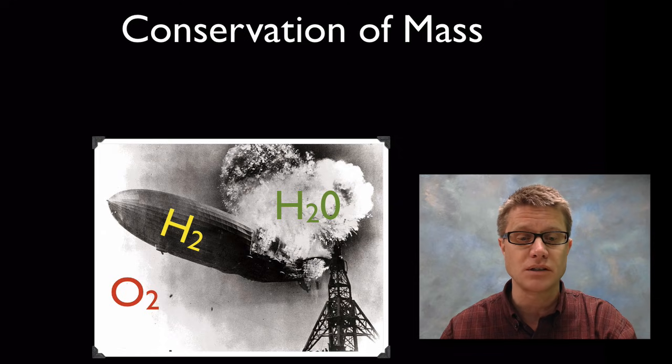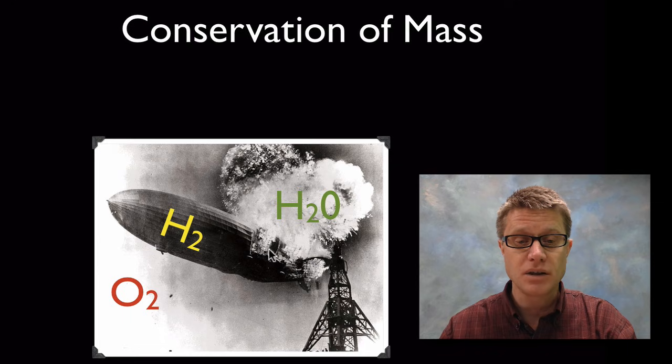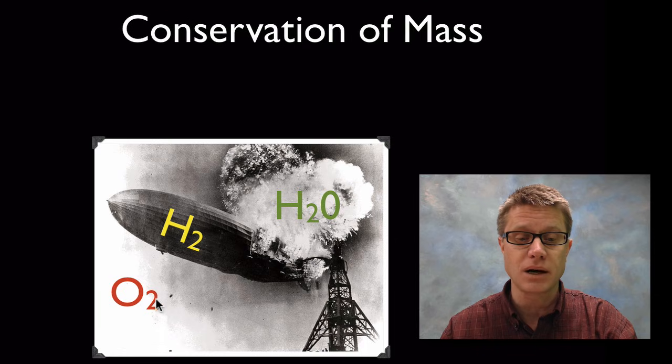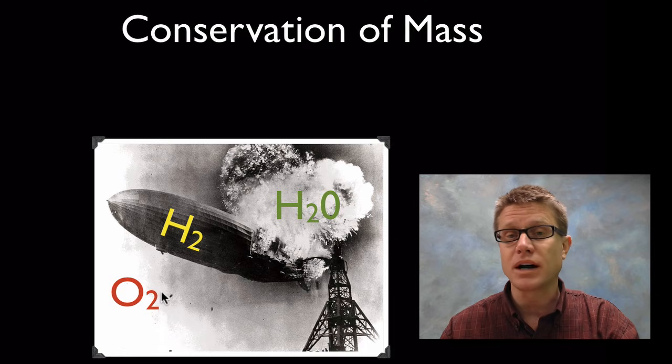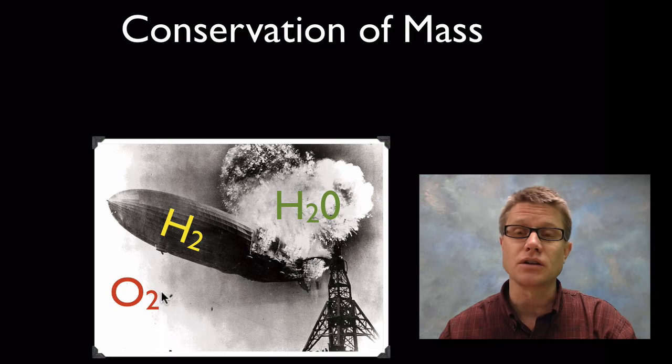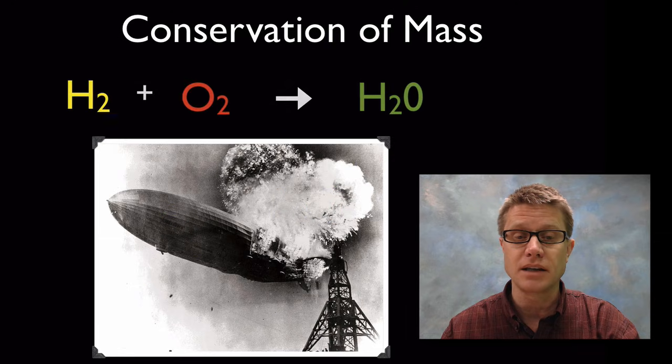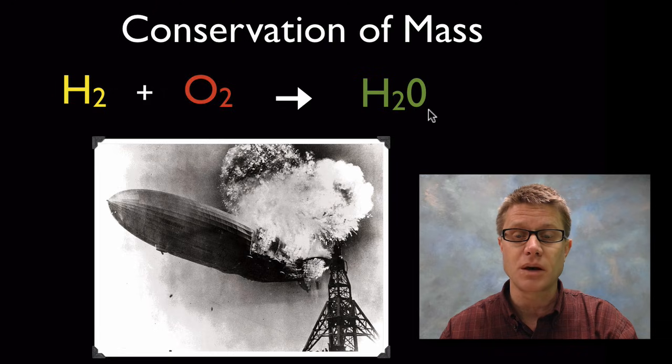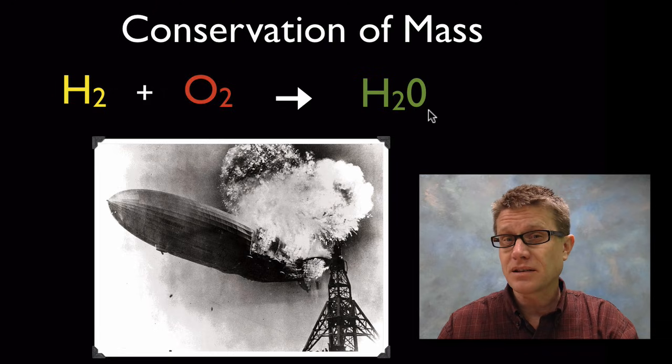And so this is the Hindenburg. That awful disaster. What was going on? We had the hydrogen gas inside the Hindenburg. Which is great. It makes it light and it allowed them to float. But it's combining here with a spark with oxygen in the air. It's producing water. It's also producing a huge amount of light and heat. And so we have a chemical reaction now. The hydrogen gas and the oxygen gas are reforming to make water. But the mass is conserved.